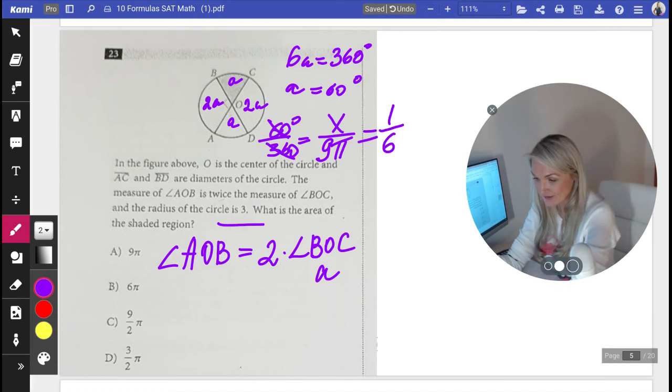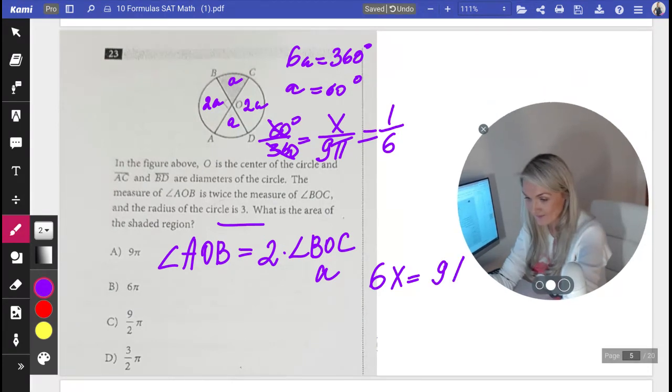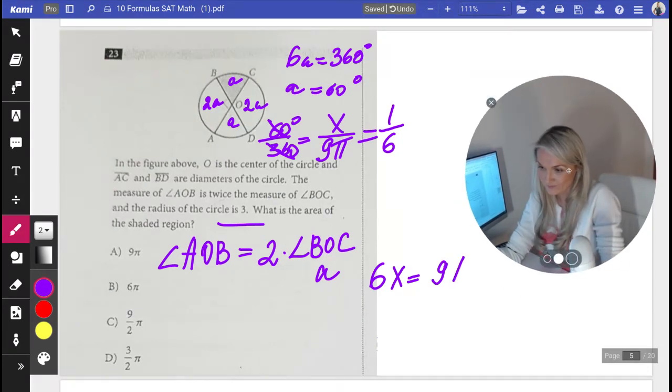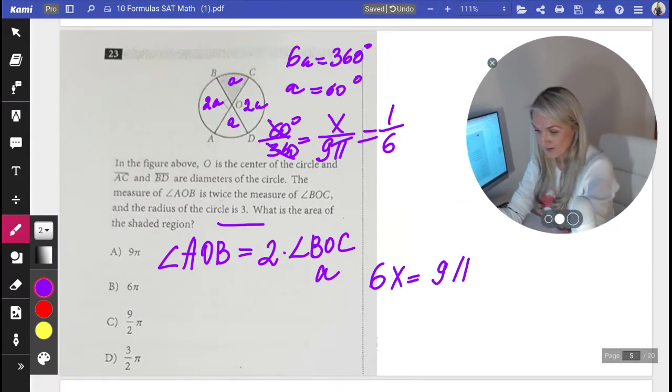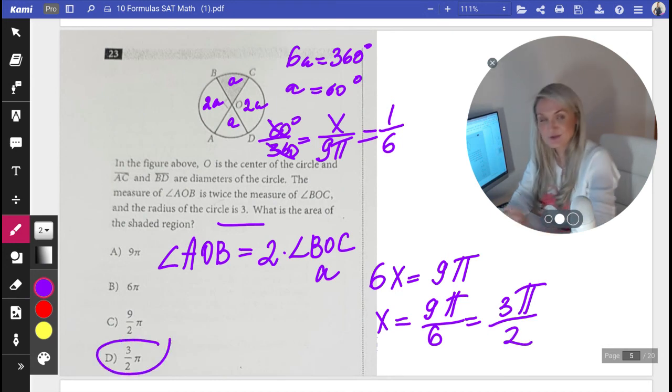So now I know that 6X is equal to 9 pi. And therefore, X is equal to 9 pi over 6. And if I simplify, I'm going to get 3 pi over 2, which is answer choice D.